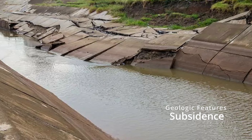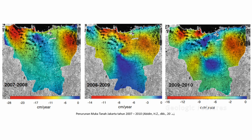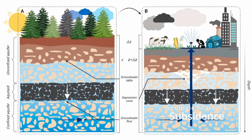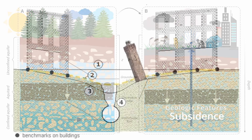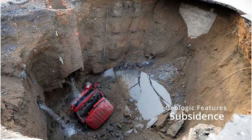Subsidence refers to settlement of the ground surface over large areas, on the order of square kilometers. Subsidence can be caused by pumping water out of the ground for irrigation or drinking purposes, pumping oil, digging large tunnels and mines, the presence of sinkholes, melting of the permafrost, and wetting of certain soils that collapse in the presence of water, called collapsible soils.